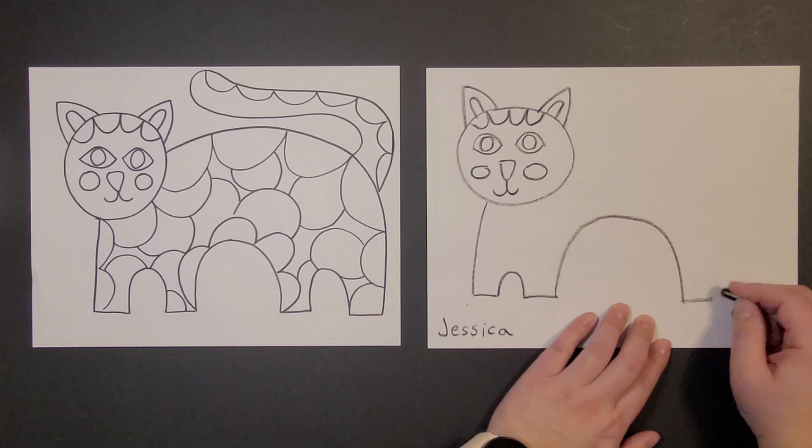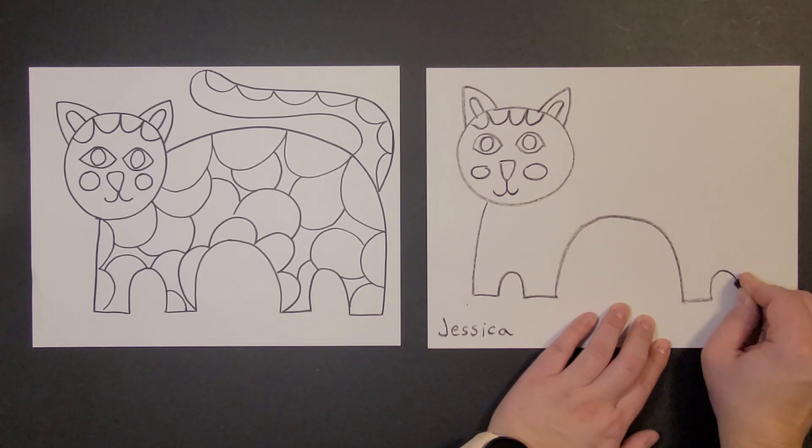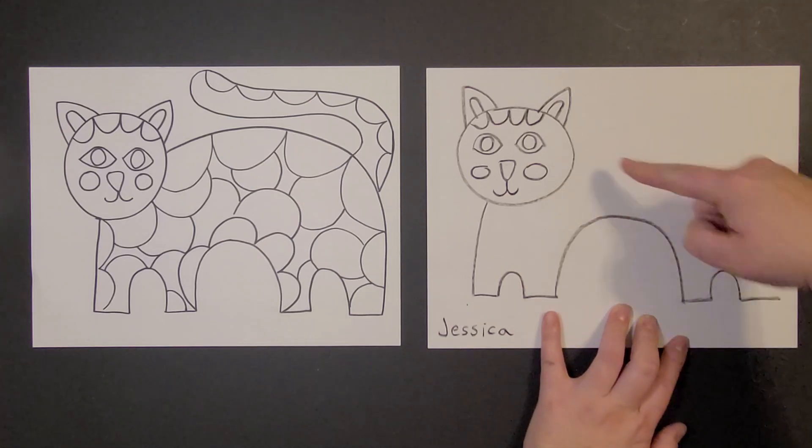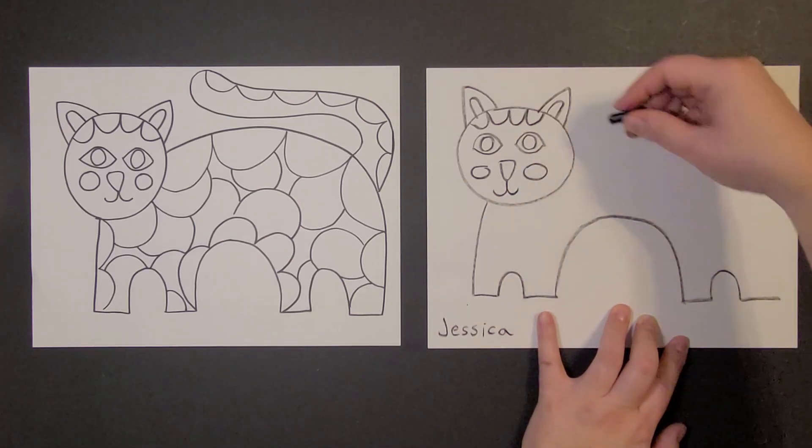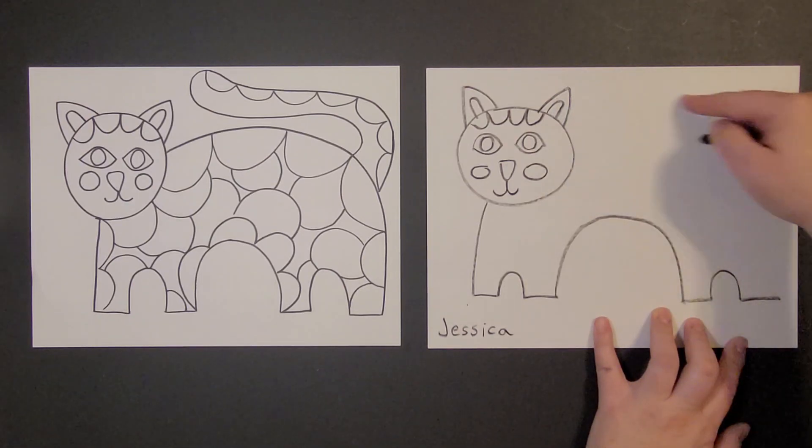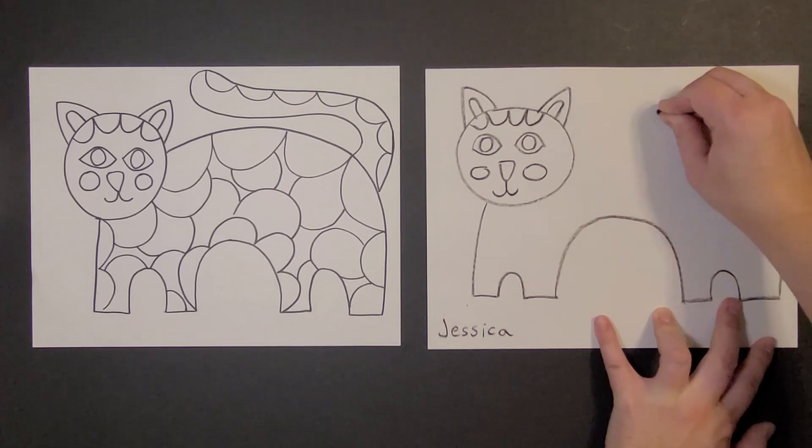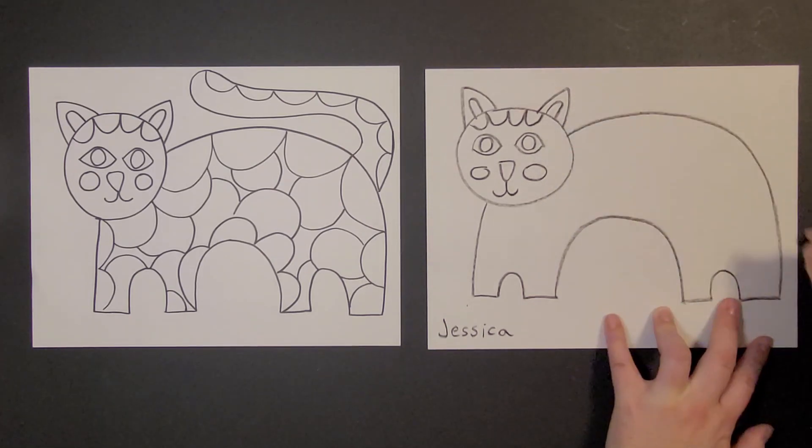And then over again for the other paw. Upside-down U over again for the other paw. Then I can come right here and do a big upside-down U. Or I can come this way. I think I'm gonna come this way. Like that.